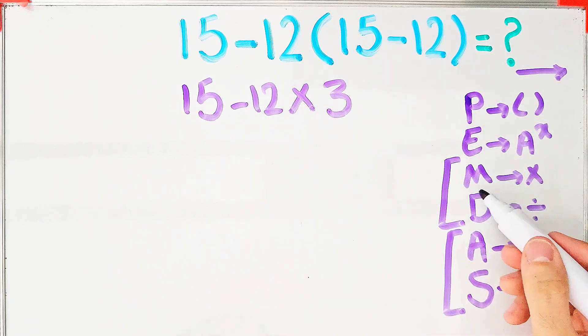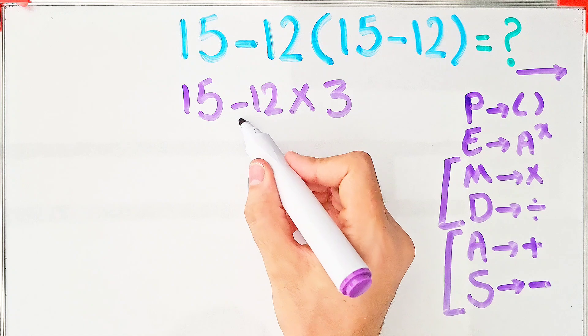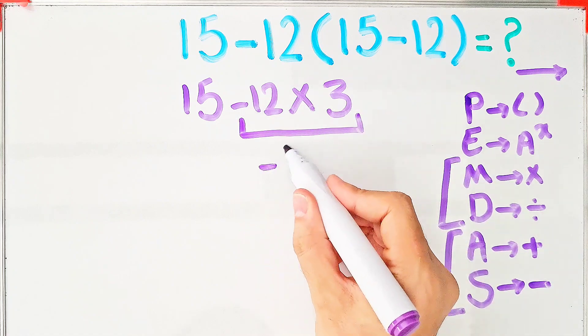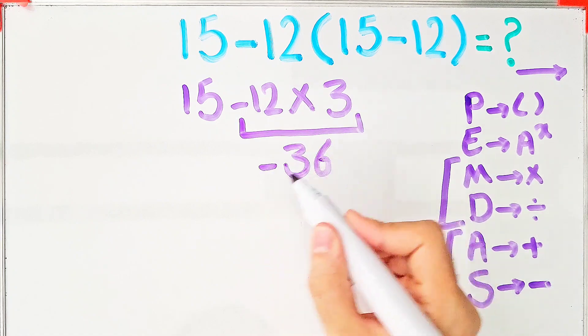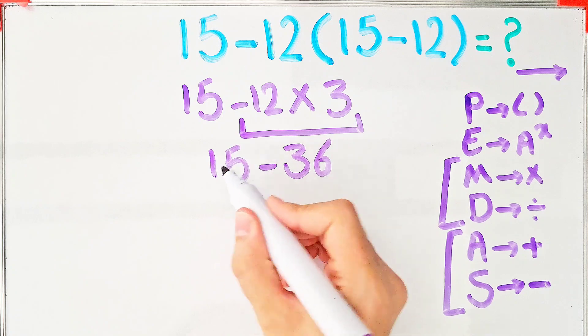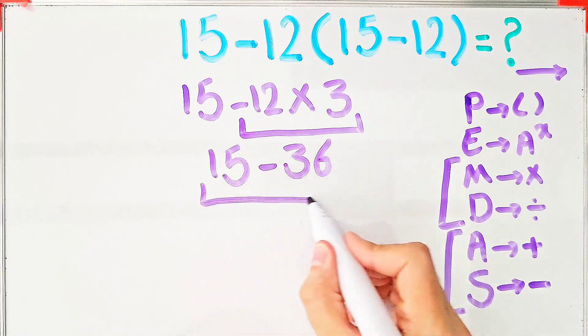First we do this multiplication. Negative 12 times 3 equals negative 36. We have 15 minus 36 that equals negative 21.